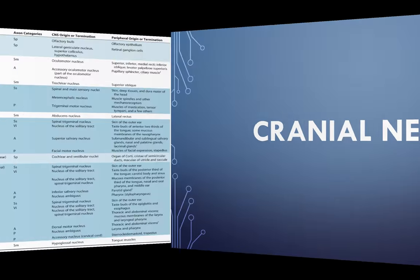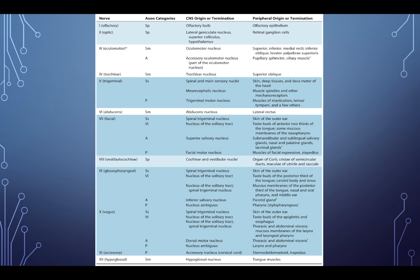Moving on to cranial nerves — there are 12 of them, and I won't read them all. For the quiz and tests, I'll ask a couple of questions about origin, termination, what they innervate, and what you may see clinically. I'll make sure you know which questions will be asked.